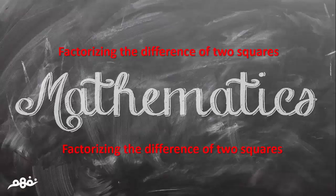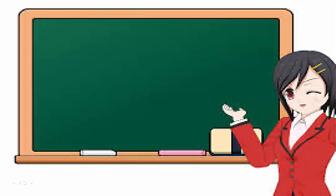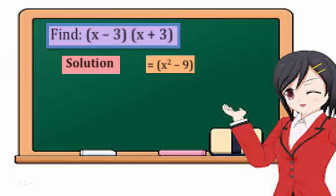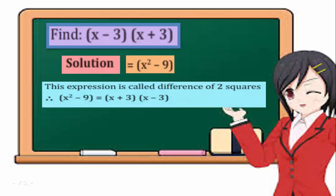The difference of two squares. Find the bracket of x minus 3 times the bracket of x plus 3. Solution equals x squared minus 9. This expression is called difference of two squares. Therefore, x squared minus 9 equals a bracket of x plus 3 times a bracket of x minus 3.